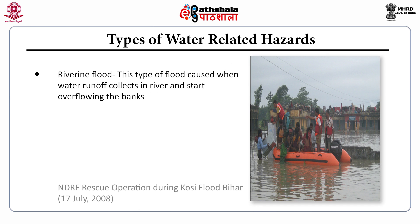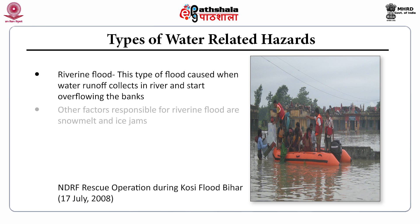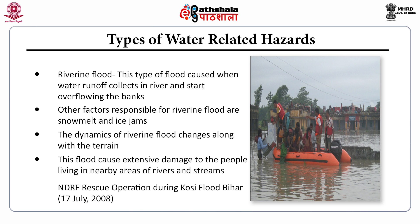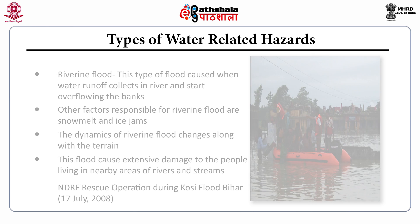The second type of flood is riverine flood. This type of flood is caused when water runoff collects in a river and starts overflowing the banks. Other factors responsible for riverine floods are snowmelt and ice jams. The dynamics of riverine floods change along with the terrain. This flood causes extensive damage to the people living in nearby areas of rivers and streams.